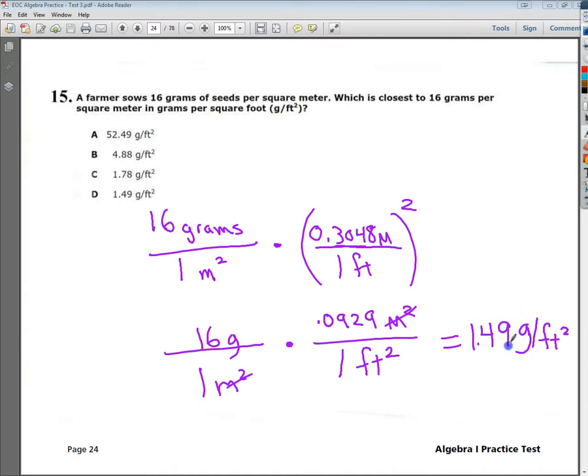So, 1.49 grams per feet squared. That's all you need to do on that problem. The only hard part about it was remembering to change that conversion factor into a square when what you're really given is one dimension. So, just adjust for the two dimensions.